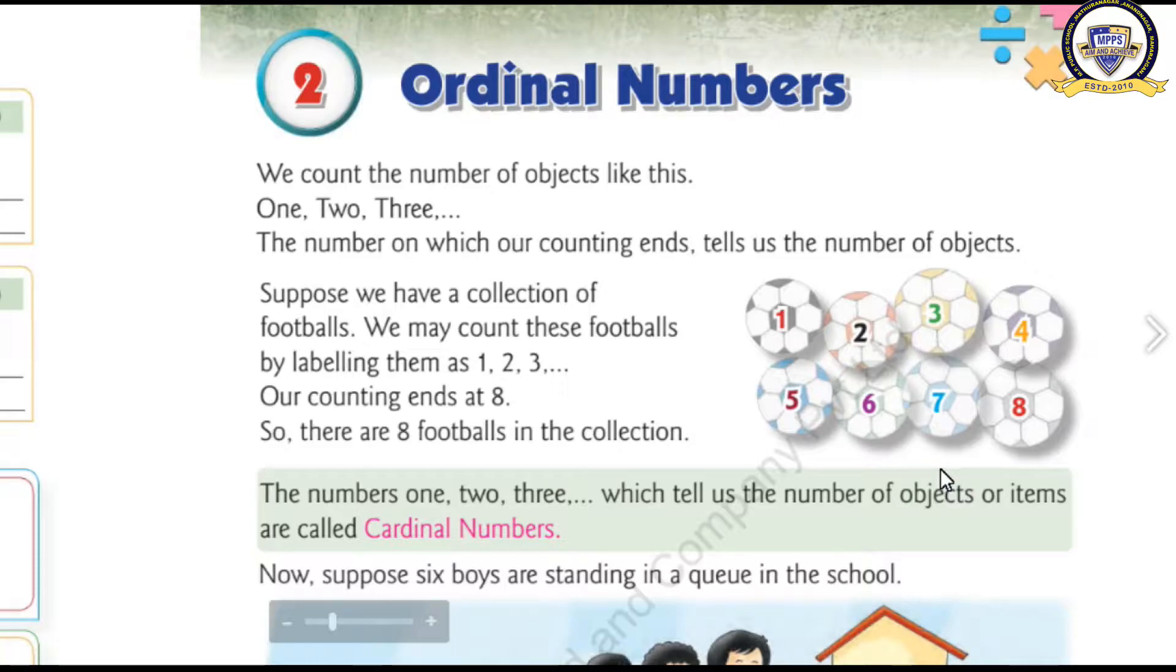So, that numbers are called Cardinal Numbers. Once more, the numbers one, two, three, which tells us the number of objects, number of items, number of things. Such type of numbers are called Cardinal Numbers.